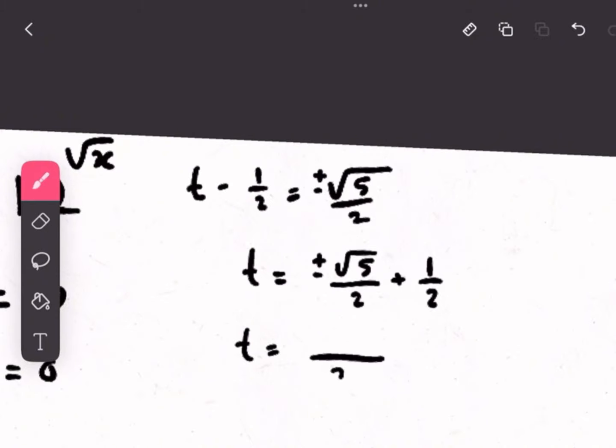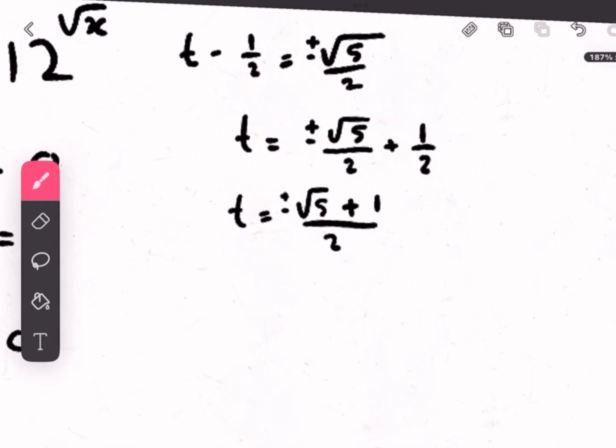Okay, now we can take negative 1 half to the other side, and if we simplify that and add the fractions together, we should end up with this answer.